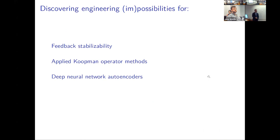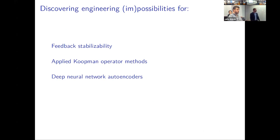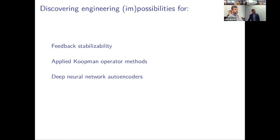I'm going to be talking about things that are both possible and impossible for engineering, in three distinct contexts. The first is in the area of feedback control and feedback stabilization. Then I'll say something about applied Koopman operator methods, which have been percolating into the robotics literature in the last decade or so. And finally, I'll say something about autoencoders, which you can create using deep neural networks.